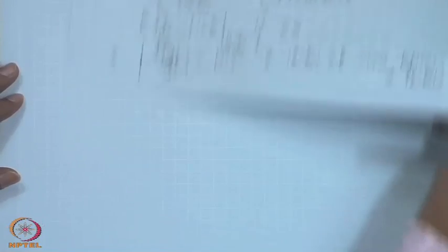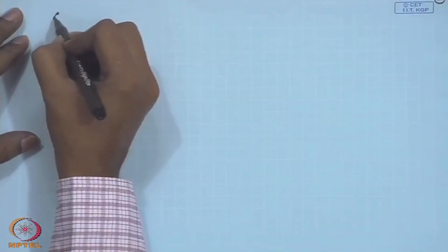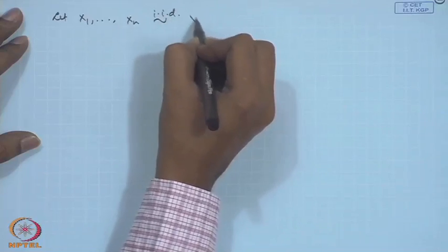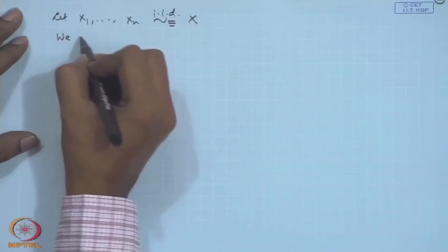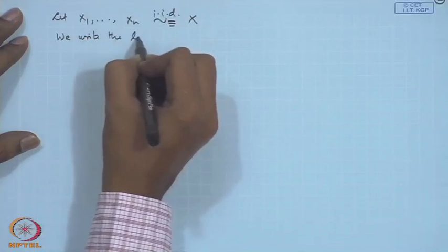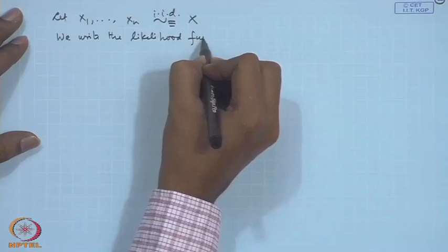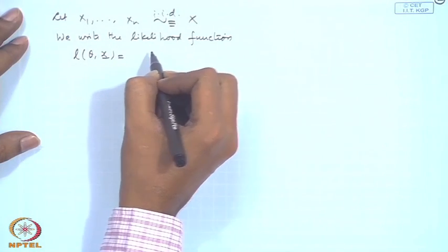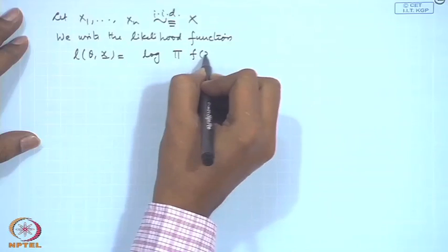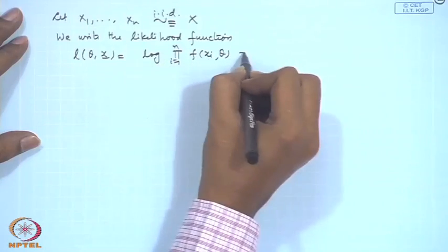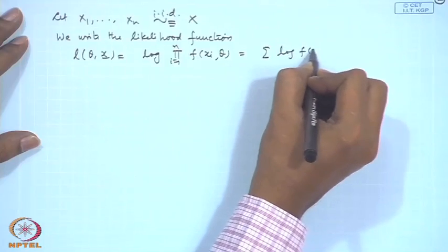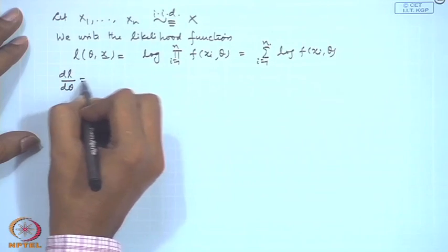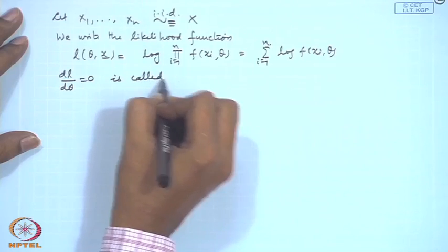Let us write down the likelihood equation. We have a random sample x1, x2, ..., xn from the same distribution. We write the log-likelihood function l(theta; x), which equals the log of the joint density, equal to the sum of log f(x_i, theta) for i = 1 to n. Setting dl/d theta = 0 gives the likelihood equation.